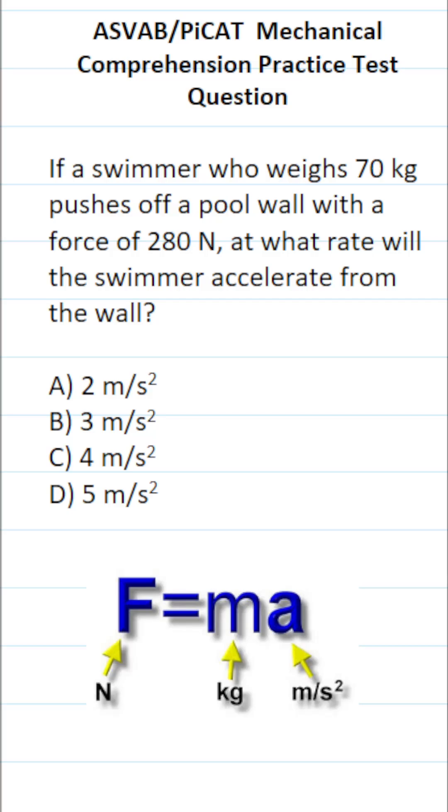This mechanical comprehension practice test question for the ASVAB and PiCAT says, if a swimmer who weighs 70 kg pushes off a pool wall with a force of 280 newtons, at what rate will the swimmer accelerate from the wall?